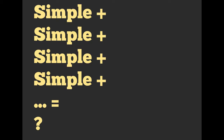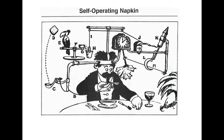But if we want to use many, many simple solutions — the simplest solutions we possibly can — together, then we end up with something like a Rube Goldberg machine. Each component is very simple, but as a whole it's incredibly complex. So sometimes using the simplest individual component does not result in the simplest overall design.